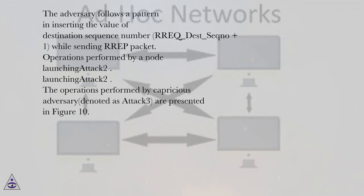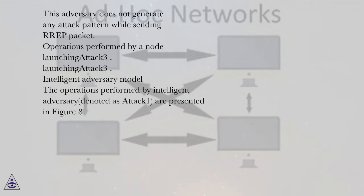Operations performed by a node launching ATTACK2. The Capricious Adversary denoted as ATTACK3 is presented in Figure 10. This adversary does not generate any attack pattern while sending the REP packet. Operations performed by a node launching ATTACK3.